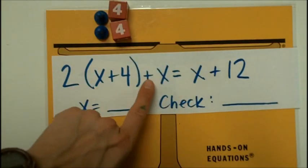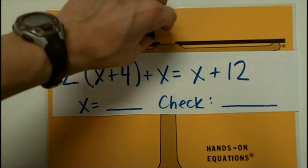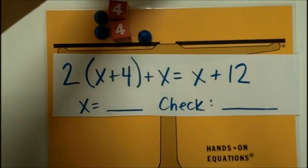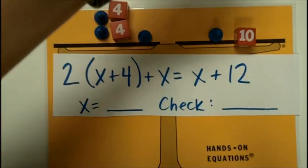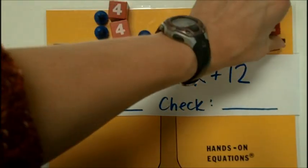On the opposite, oh, and then I have another x to add to that. On the opposite side I have an x and a 12, or 10 plus 2.